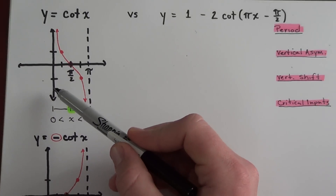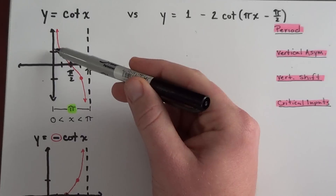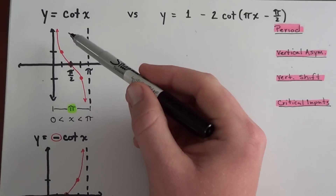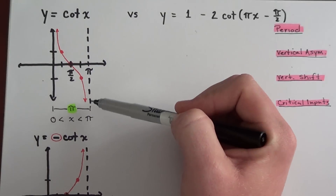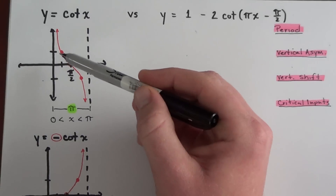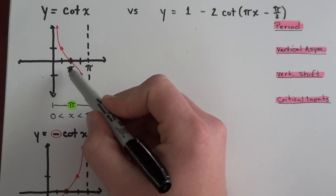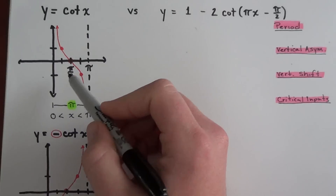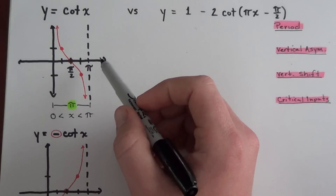If you take the cotangent of zero, you get an undefined value, so the y-axis at x equals zero is a vertical asymptote — a dashed line. Similarly, cotangent of pi is also undefined. The critical values I want to focus on are pi over four, pi over two, and three pi over four, because these are the ones that give us nice integer outputs.